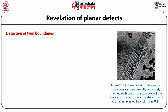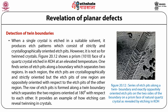Now detection of twin boundaries. When a single crystal is etched in a suitable solvent, it produces etch patterns which consist of strictly and crystallographically oriented etch pits. However, it is not so for twinned crystals. A prism (10-10) phase of a quartz crystal etched in potassium hydroxide at an elevated temperature shows a series of etch pits along a boundary which separates two regions. In each region the etch pits are crystallographically and strictly oriented, but the etch pits of one region are oppositely oriented with respect to the etch pits of the other region. The row of etch pits is formed along a twin boundary which separates the two regions oriented at 180° with respect to each other. It provides an example of how etching can reveal twinning in crystals.